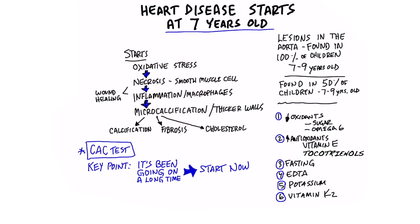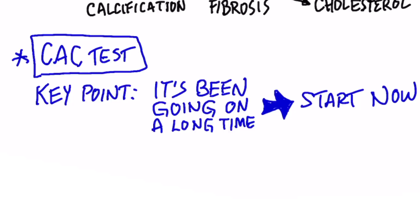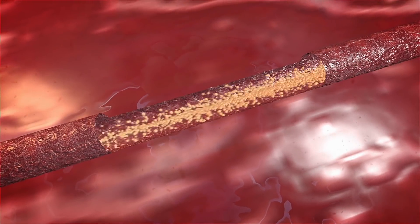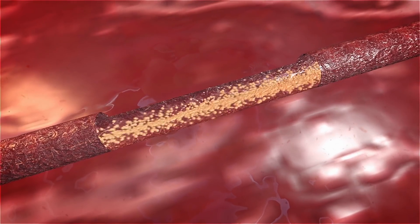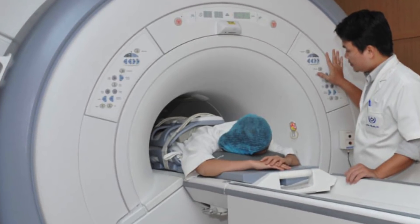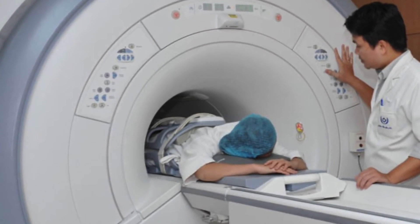There's a test — a very important test — I highly recommend everyone get. It's called a CAC test. It stands for coronary artery calcification test. It doesn't take that long, it's not very expensive, but it measures calcium in your arteries, and it's one of the best predictors of mortality. Definitely get that test. I'll put a link down below for more information, also a video showing my test results.